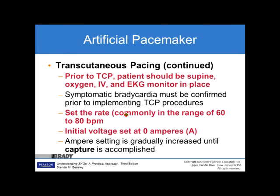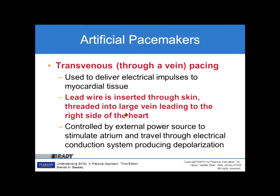Prior to transcutaneous pacing, patients should be supine with oxygen, IV, and EKG monitor in place. Symptomatic bradycardia must be confirmed before implementing transcutaneous pacing procedures. Set the rate, commonly in the range of 60 to 80 beats per minute, with initial voltage set to 0 amperes. The ampere setting is gradually increased until capture is accomplished. Electrical capture means you will have a spike followed by a wide QRS on the monitor. The second way of knowing you have capture is an associated pulse with that beat.